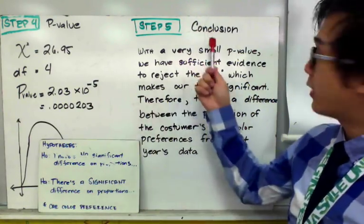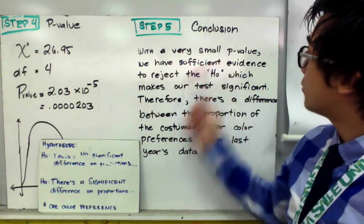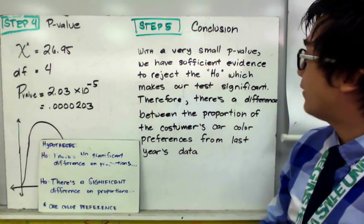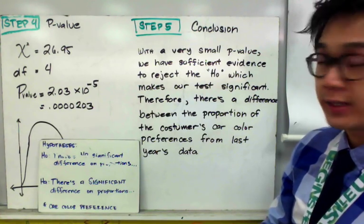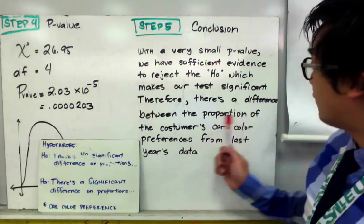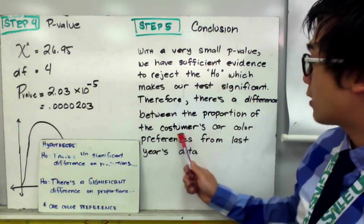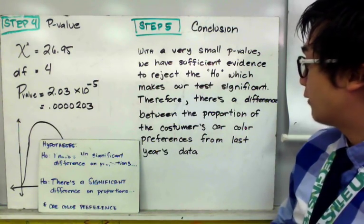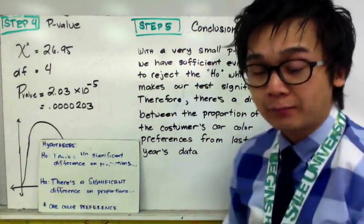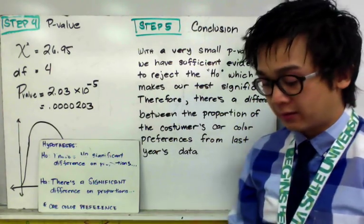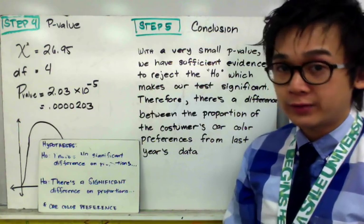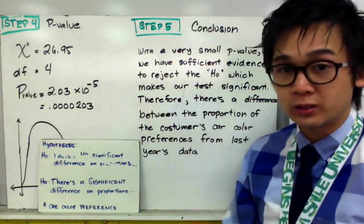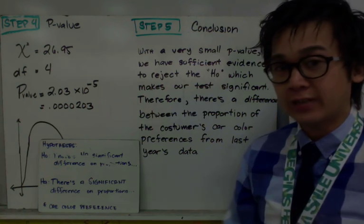So therefore, for our conclusion, with a very small p value, we have sufficient evidence to reject the null hypothesis, which makes our test significant. Therefore, there's a difference between the proportion of the customer's car color preferences from last year's data. So that means Tash can conclude that there is a difference for the car color preferences for this year's customers based on the last year's data set that we had.